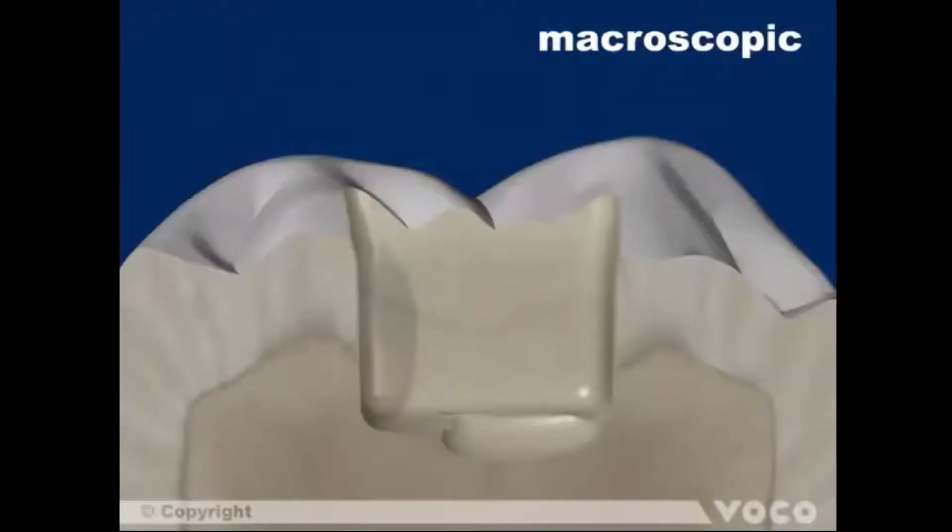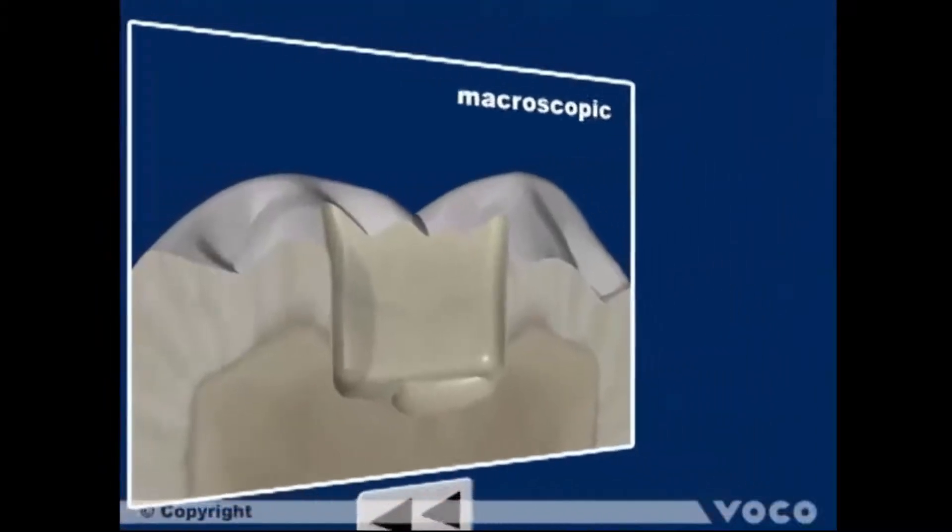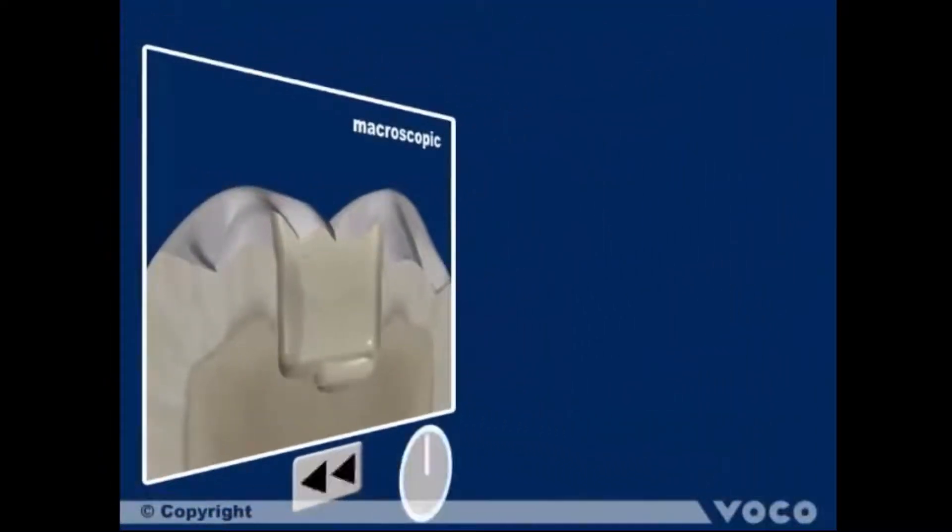Light curing of the adhesive layer for 10 seconds with a minimum of 500 milliwatts per centimeter squared. The main components of the tooth substance, dentin and enamel, react differently after the application of a universal adhesive used in self-etch mode. Let's rewind the video and have a closer look at the microscopic reaction of the adhesive on the enamel as well as on the dentin.